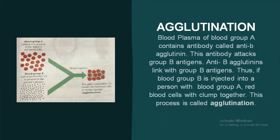If blood group B is injected into a person with blood group A, red blood cells will clump together. This process is called agglutination. You can see this in the diagram very clearly.